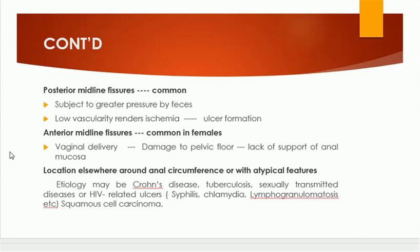Examples of underlying causes include Crohn's disease, tuberculosis, sexually transmitted diseases, or HIV-related ulcers — such as syphilis, chlamydia, and lymphogranulomatosis — which can result in fissure-in-ano formation. Similarly, squamous cell carcinoma is one underlying cause of anal fissure. So fissure may be primary or it may be secondary.